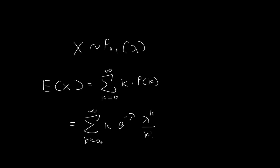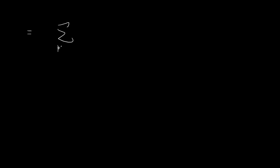Continuing with this expression, we can see that the index starts with k equal to 0. So the first term is 0 multiplied by something, which means the first term is just equal to 0. So we can move this index up and start with k equal to 1, because the k equal to 0 term is just equal to 0.